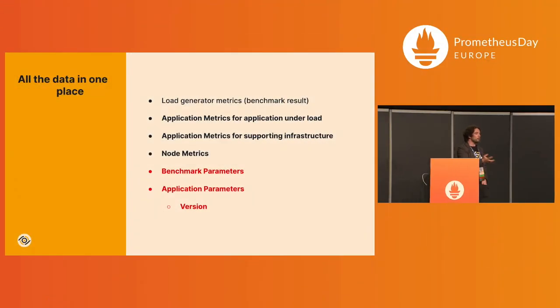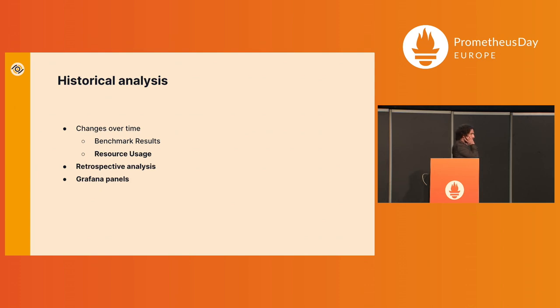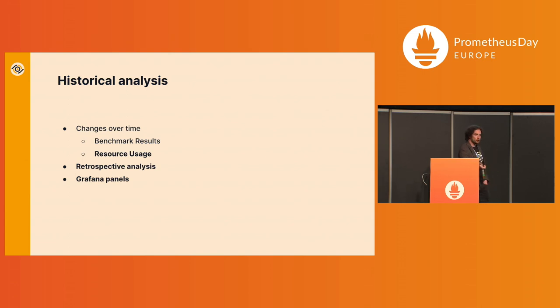If you've ever done benchmarking for a long enough time, you will know that coming back to a benchmark after a month, you've already forgotten exactly what CLI parameters or other kinds of parameters you provided to it. You also forgot which exact version of the system you were benchmarking. With this setup, if you expose this information through simple Prometheus metrics, you now store it side by side and this data cannot get out of sync. In addition, you can perform easy historical analysis — not only about how fast your benchmark ran and how much load it could handle, but also about things like resource usage. For example, you could track the cache hit rate of your system over time as your system evolves.